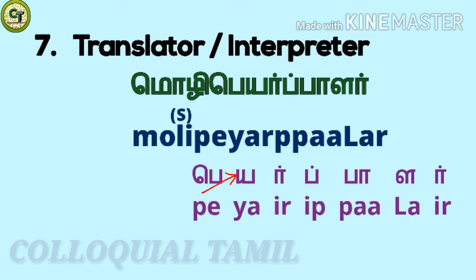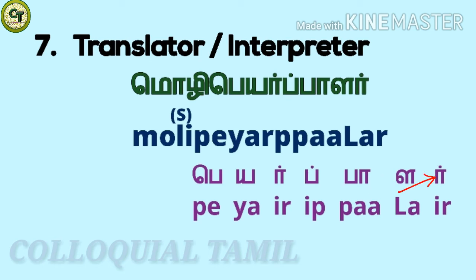For 'pera palar': 'pe' a short zone letter, 'e' a short zone letter, 'ir' a consonant, 'ip' a consonant, 'paa' a long zone letter, 'la' a short zone letter, 'ir' a consonant together: 'pera palar.' So translator/interpreter is 'moli pera palar.'